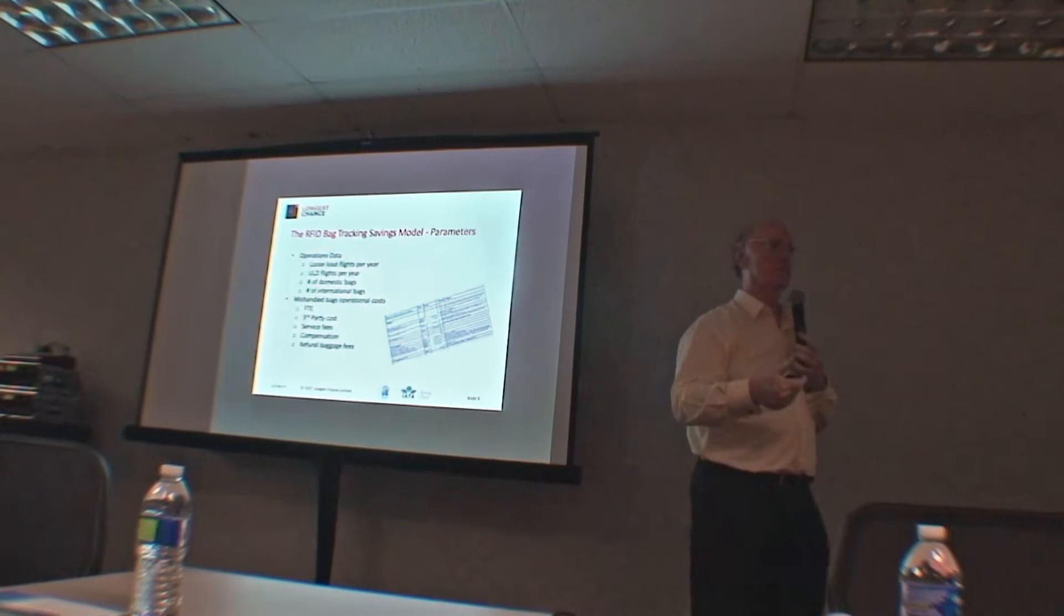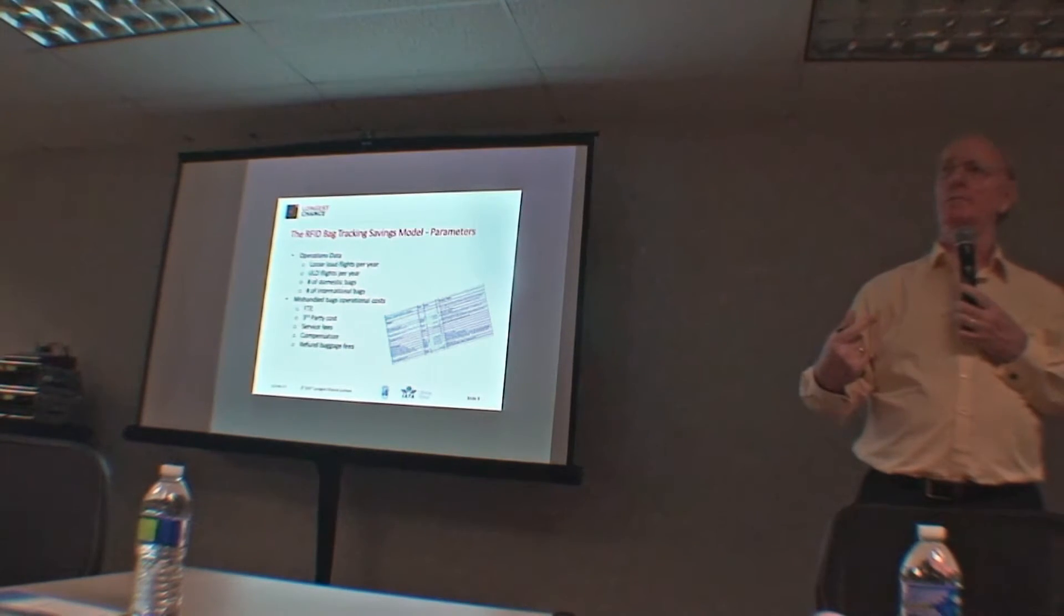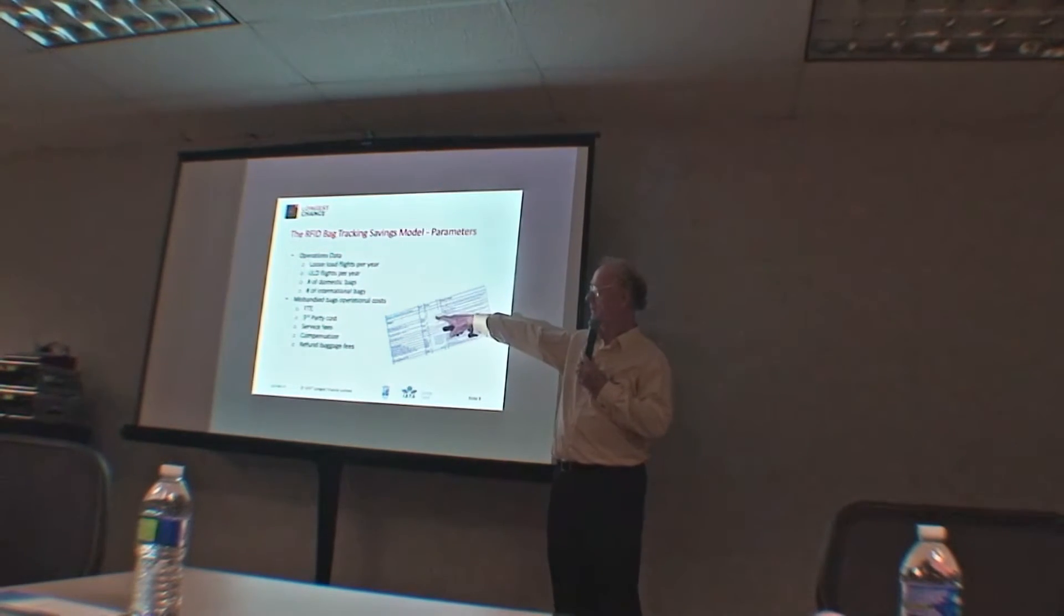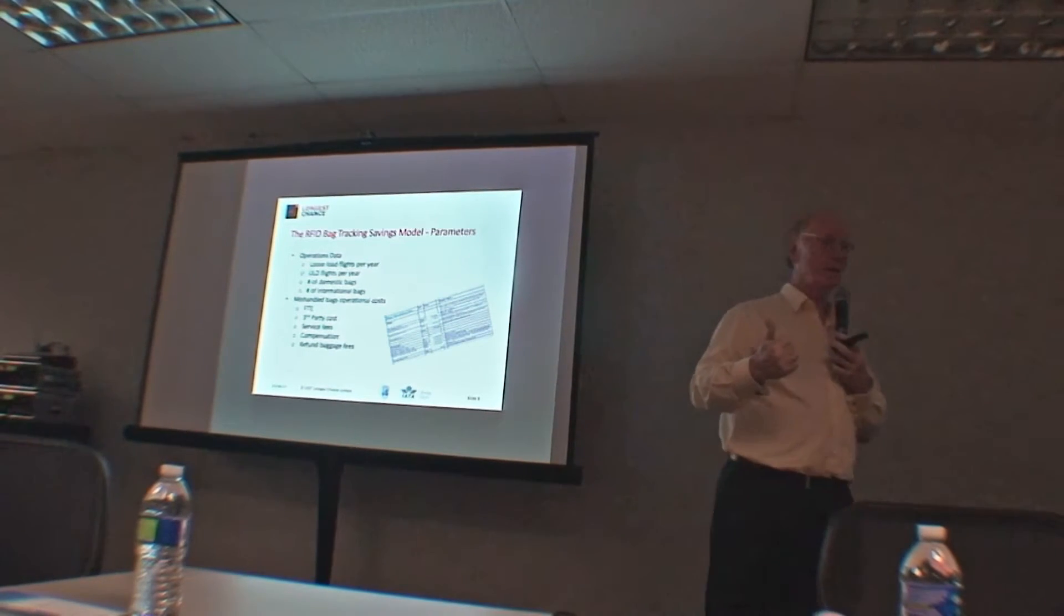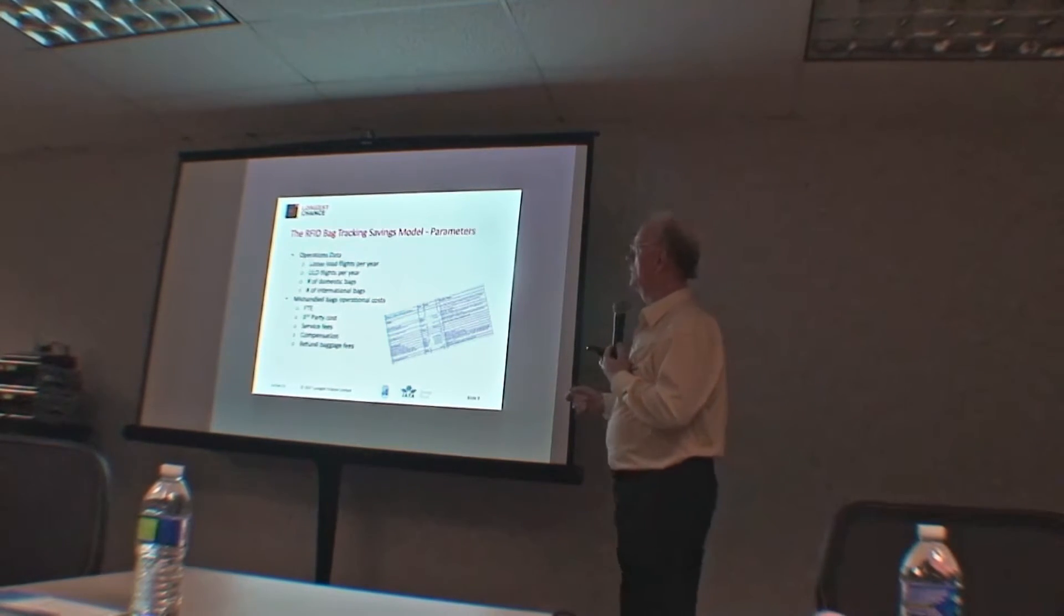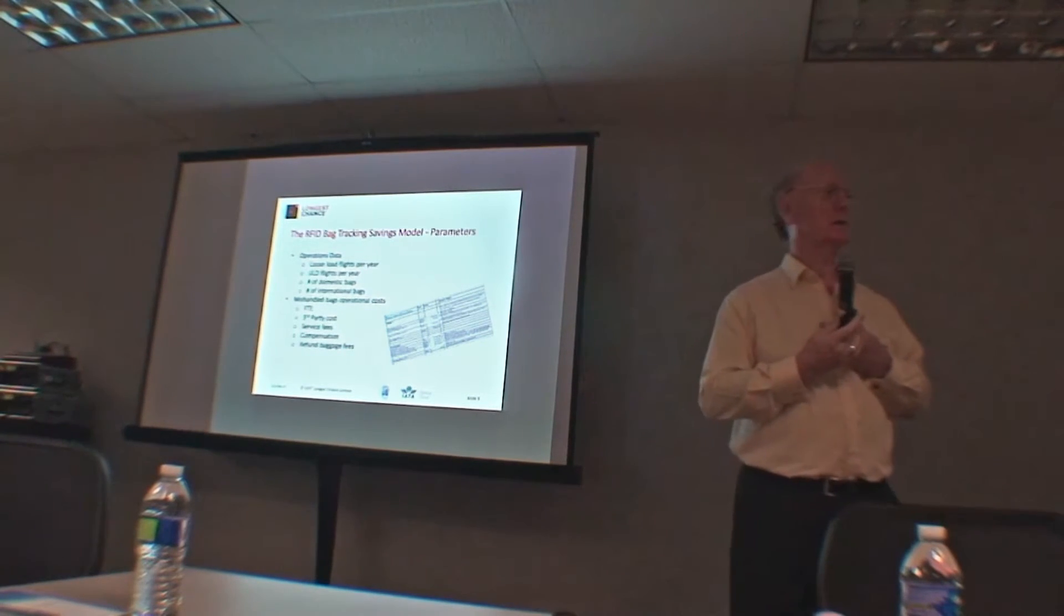So what we do, and this is actually, you can see part of the structure of the model there. What we do is we actually look first at some operational data. Now, you need that in the model. For instance, if you've got an average cost per mishandled bag that we were talking about earlier, you need to know how many bags you're moving in a year. That's your total cost. And that's potentially the figure that you can reduce by X amount. So we actually look and we gather, for instance, what are ULD flights, what are loose loaded flights, because the process for loading them is different. So we make that differentiation. We go all the way through the number of domestic bags, the number of international bags. And then we also go through all the costs involved. This is the FTEs in your internal infrastructure. Third-party costs, for instance, delivering the bag to the passenger. Service fees. Compensation. Refunding of the baggage fees. All of those need to be in the model because they potentially all can be impacted and they are your cost today.